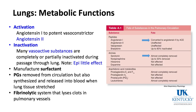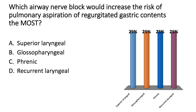In carcinoid syndrome, with liver and lung metastases producing serotonin that exceeds the lung's ability to inactivate it, patients develop flushing and other serotonin-excess symptoms. Question: which airway nerve block increases the risk of pulmonary aspiration most? The recurrent laryngeal nerve — sensory below the glottis — because blocking it means aspiration of regurgitated contents will reach far into the lung before the patient coughs. This is a concern during awake fiberoptic intubation in a full-stomach patient.